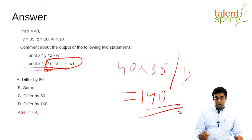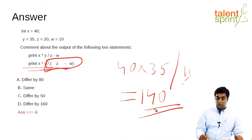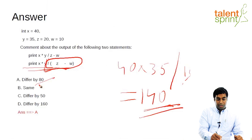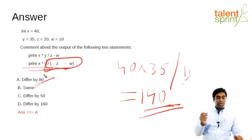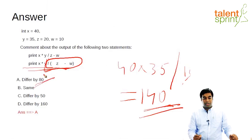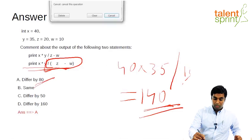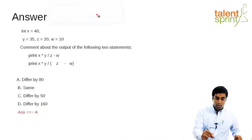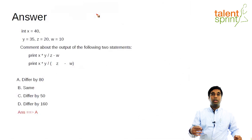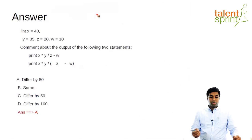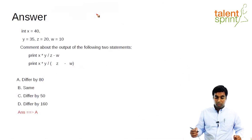The earlier answer was 60 and now the answer is 140, so the difference is 80. That is why the correct answer is A, which is 80. I really hope you learned about operator precedence and the way it works from this particular question.